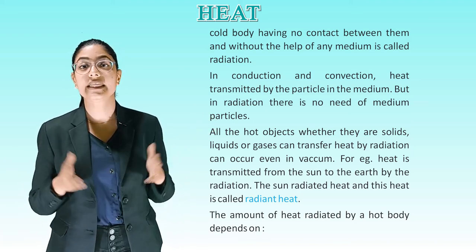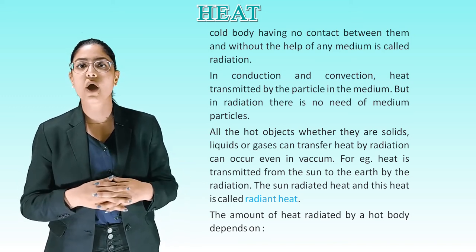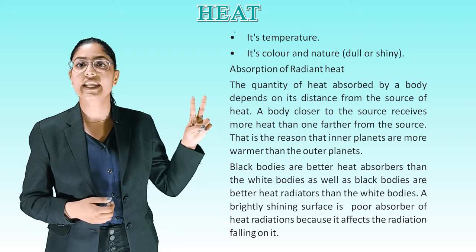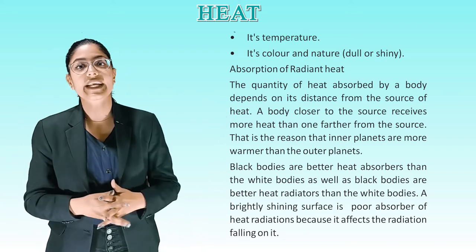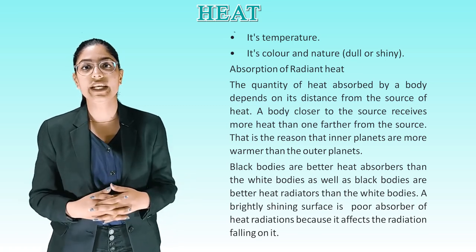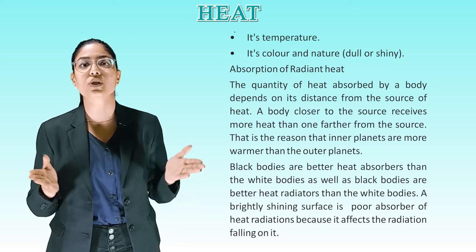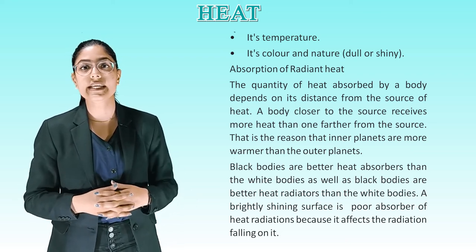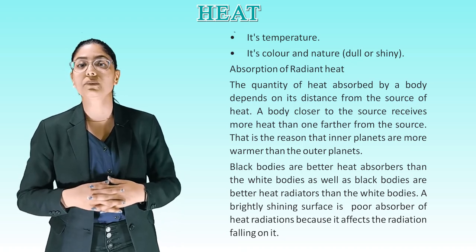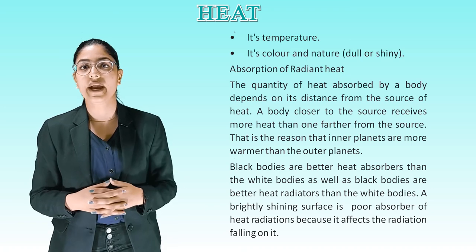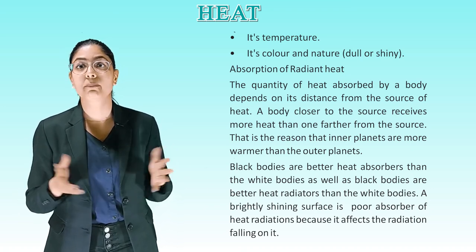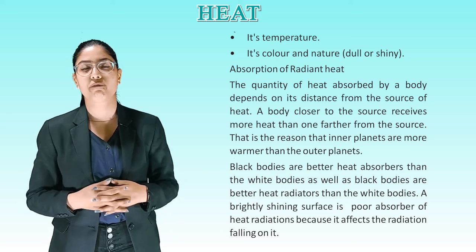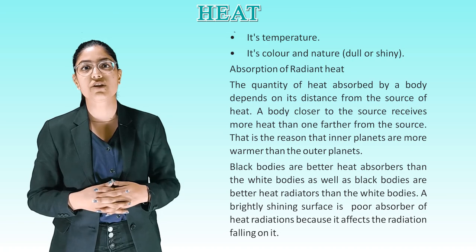The sun radiates heat, and this heat is called radiant heat. The amount of heat radiated by a hot body depends on its temperature and its color and nature — whether dull or shiny. Regarding absorption of radiant heat: the quantity of heat absorbed by a body depends on its distance from the source — a body closer to the source receives more heat. That is why inner planets are warmer than outer planets. Black bodies are better heat absorbers and better heat radiators than white bodies. A brightly shining surface is a poor absorber of heat radiation because it reflects the radiation falling on it.